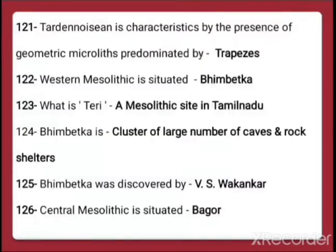Question number 121: Tardenoisian is characterized by the presence of geometric microliths, predominated by trapezes. The main characteristic of the Tardenoisian culture was geometric microliths, and the most dominating quantity found among those was trapezes.